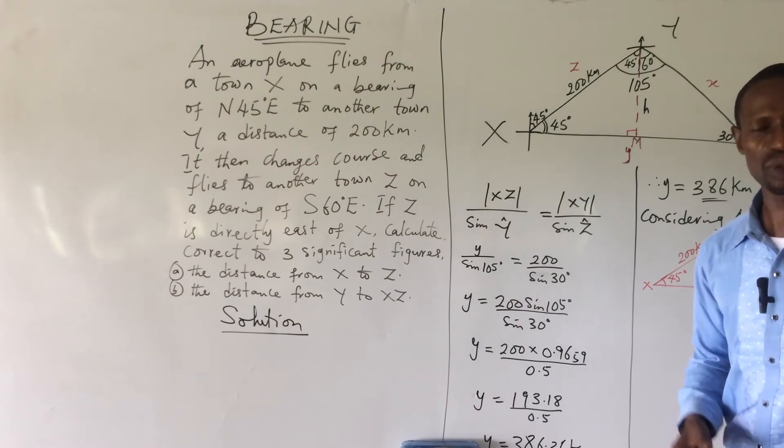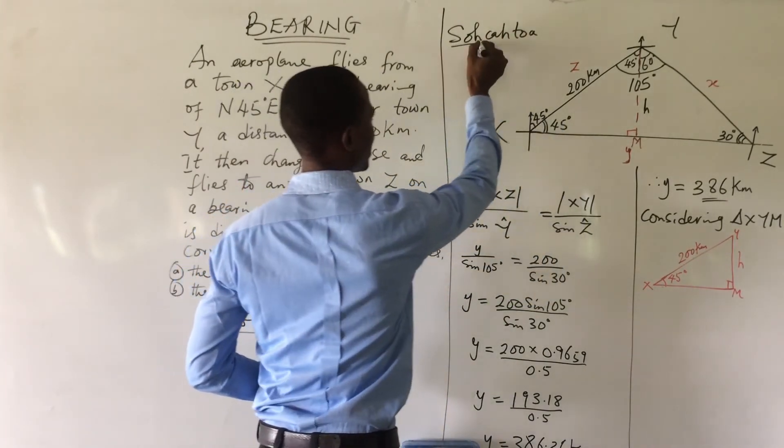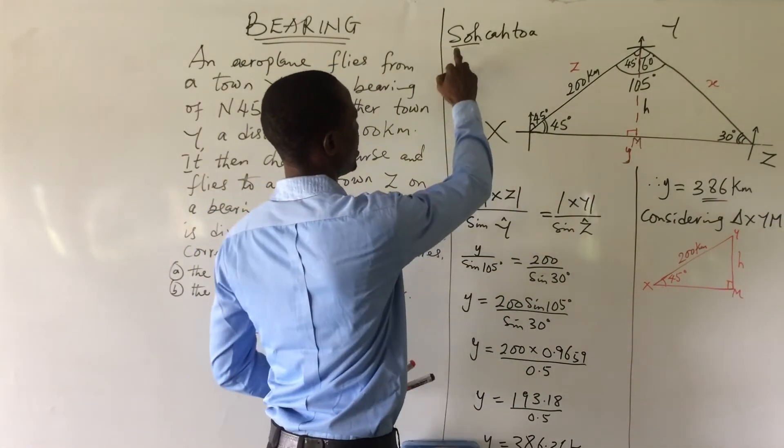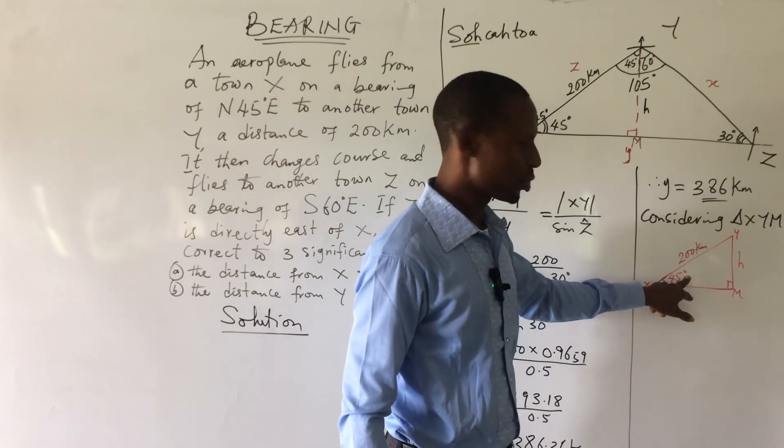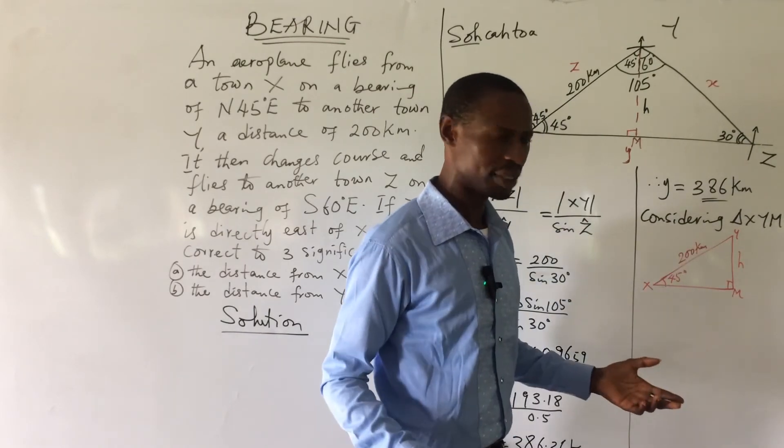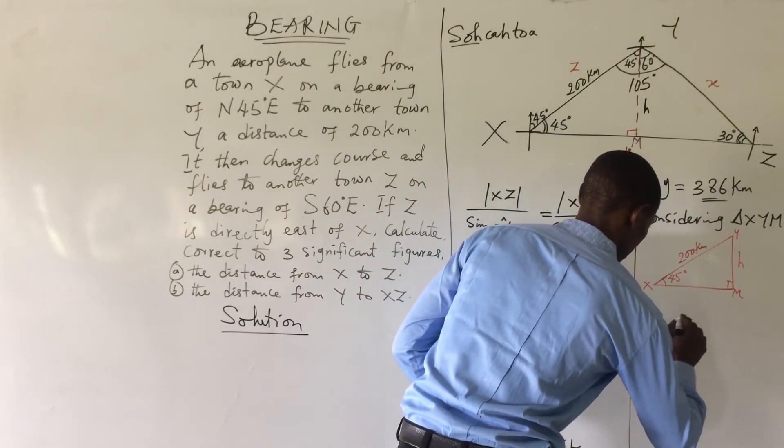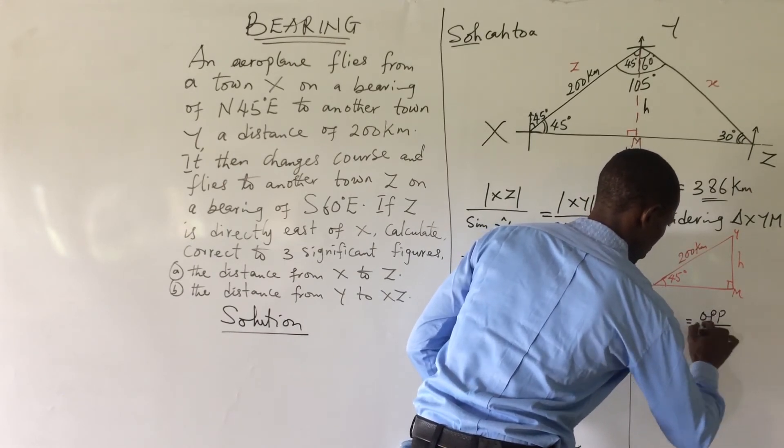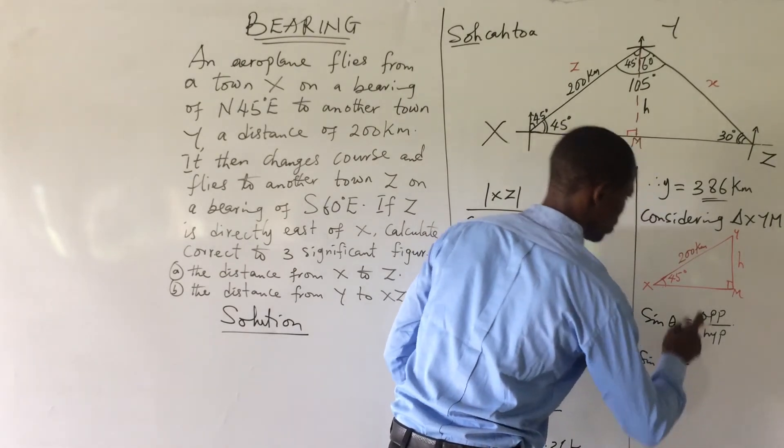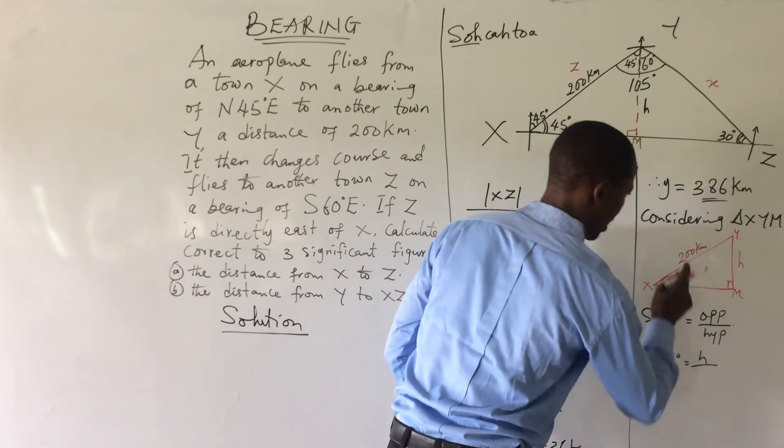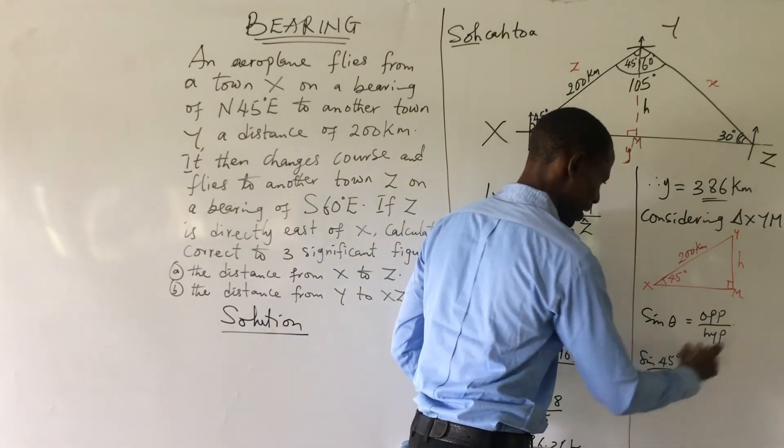The only relationship or the formula we can use in solving this, we cast our mind back to what is called SOHCAHTOA. If you recall, from SOHCAHTOA, we are taking the first one. The first one says sine theta equals opposite over hypotenuse. This is our hypotenuse, this is our opposite, this is our theta. The one we're looking for and the other two parameters are given. Using the formula sine theta equals opposite over hypotenuse. Our theta is 45. This gives us sine 45 degrees equals the opposite is h, which is what we're looking for, over hypotenuse is 200.